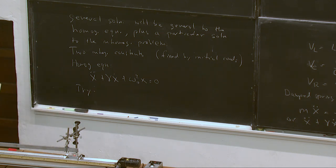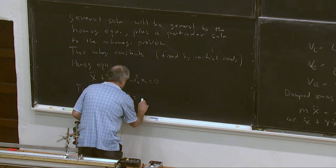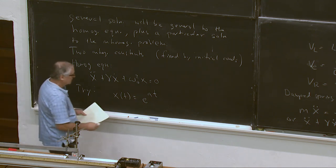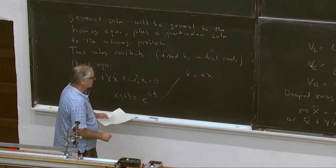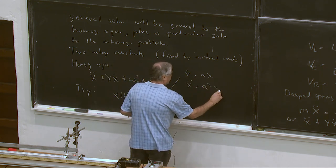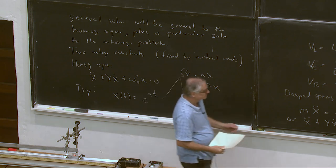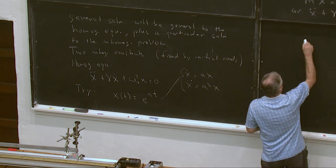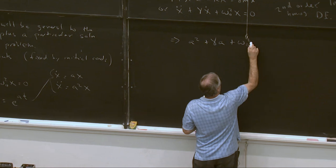Of course, the point here is that we don't necessarily have to do anything fancy if we can guess the solution. So in this case, we probably can. So let's try x of t is equal to e to some constant times time. So let's see. So we need to get x dot. X dot is A times x. X double dot is A squared times x. And so let's plug that into the differential equation.